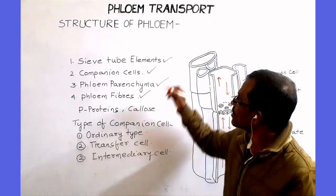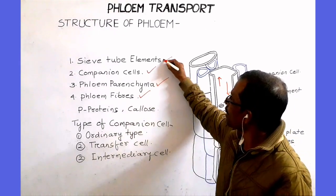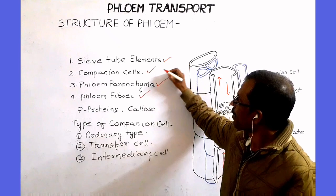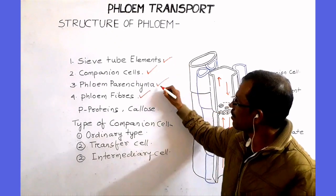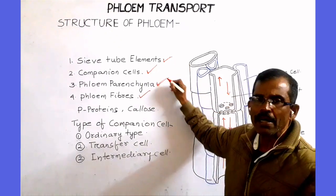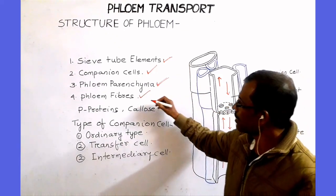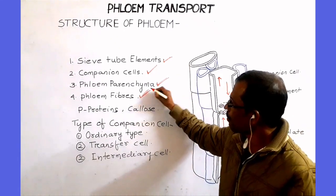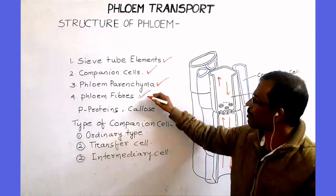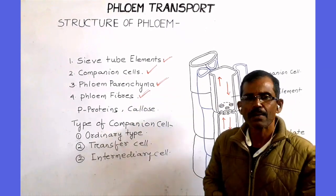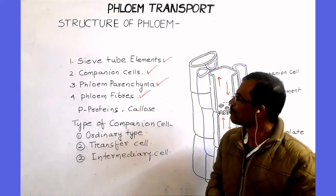They are sieve tube elements, companion cells, phloem parenchyma, and phloem fibers. In some species, phloem fiber may or may not be present.